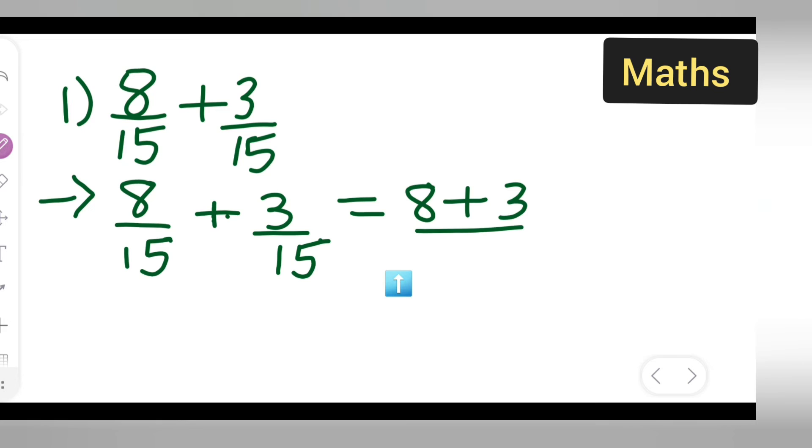Now this is equal to what? What is 8 plus 3? 8, 9, 10, 11. So your answer is 11 upon 15. I hope you all have understood how to add, especially when the denominator is the same.